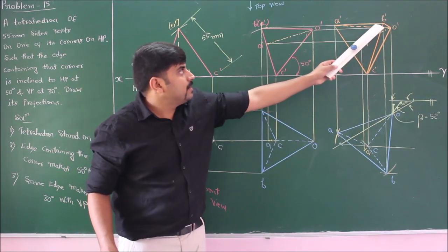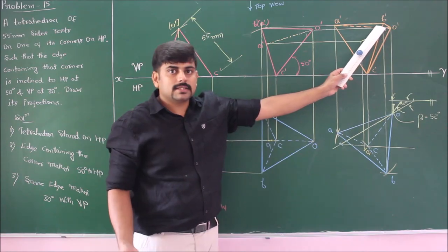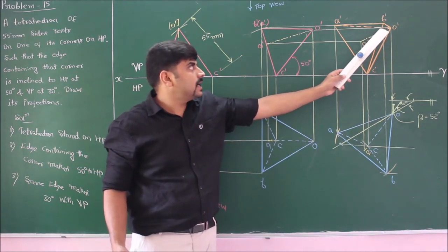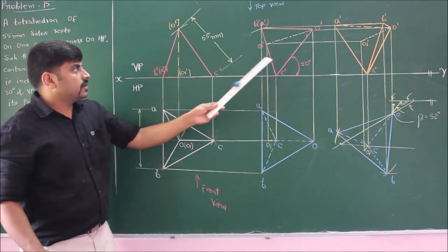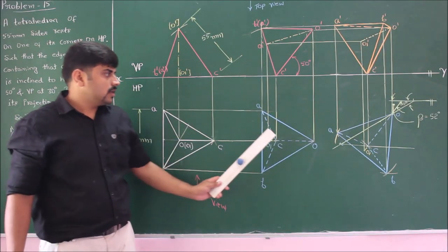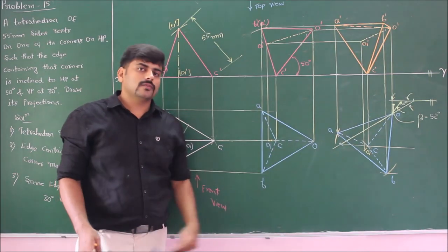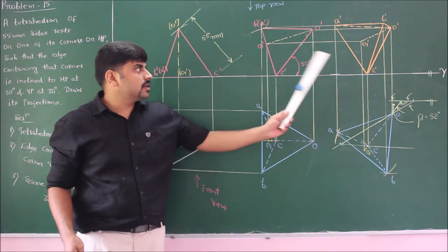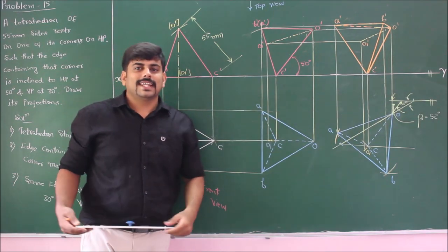Observe that C-prime and B-prime are visible while A-prime and O-prime are invisible. As per the second condition, common lines where one is invisible and one is visible cannot cross over. The same color is used for both front views, meaning they are of the same dimensions, and similarly for the two top views. As per the given question, the tetrahedron rests on one of its corners on HP. That concludes this lecture.